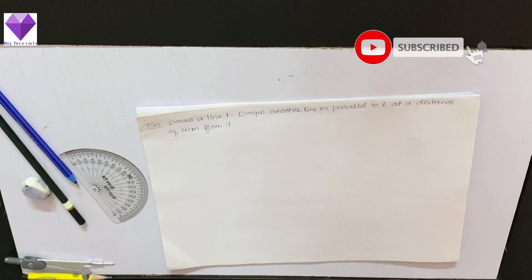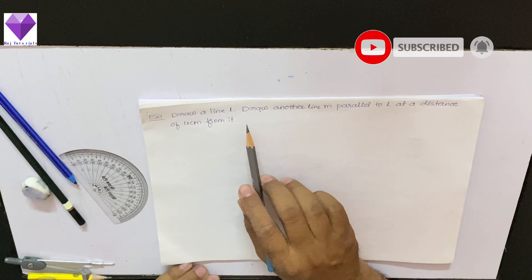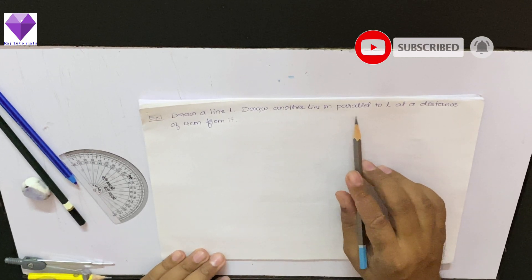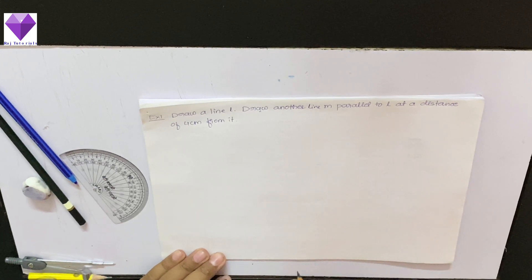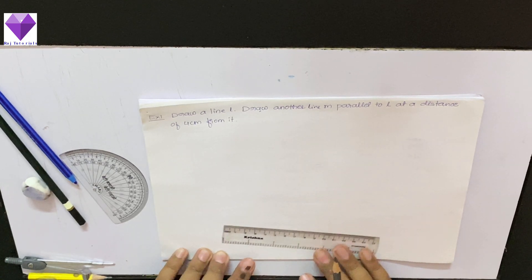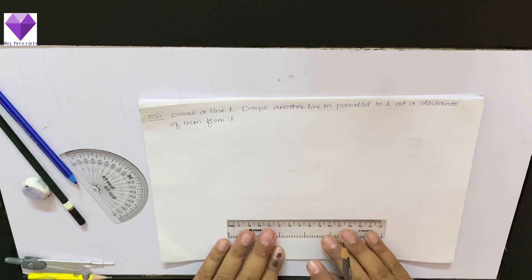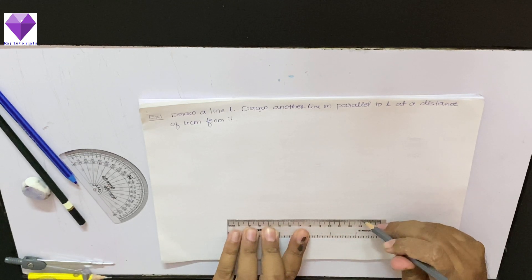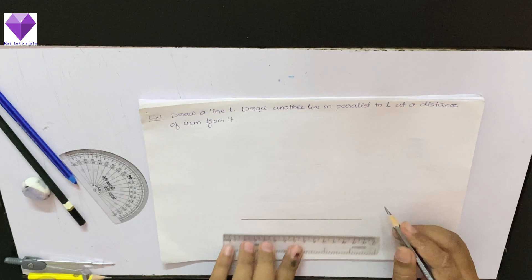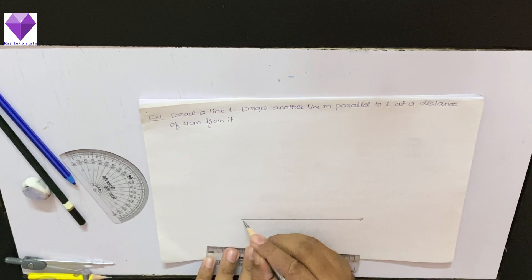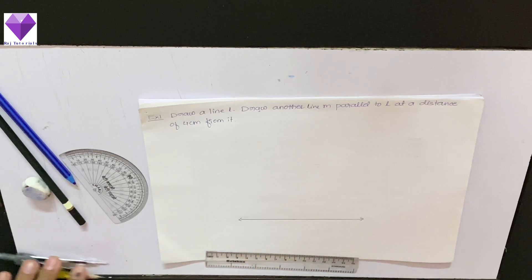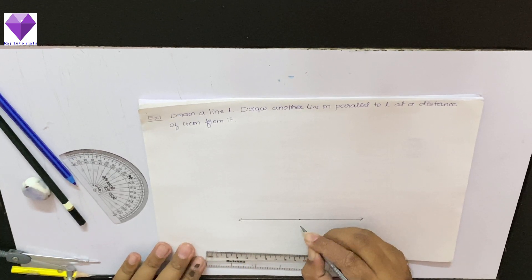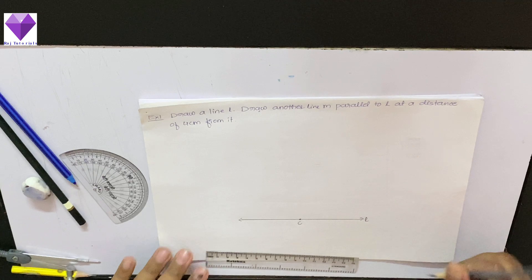Hello students, now we are going to draw a line l and draw another line m parallel to l at a distance of four centimeter from that. So for this, first of all I will take line l and draw it. Now on this with any point, this is my line l, now with any point C.